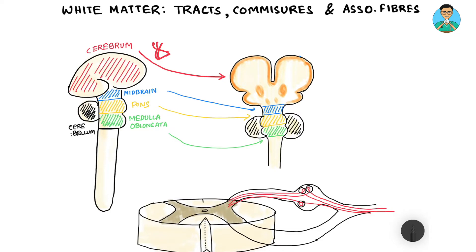In the previous video we learned about the gray matter and the arrangement of gray matter and white matter in the brain and spinal cord. In this video we will see in detail about the different types of white matter in our central nervous system.